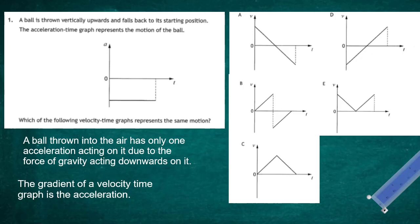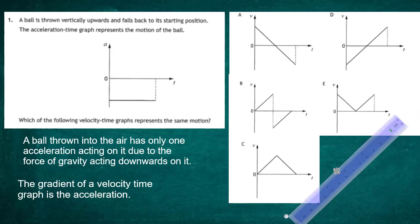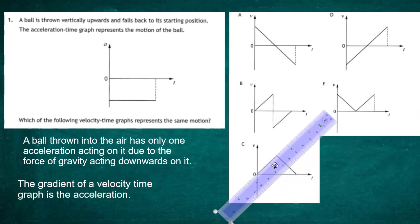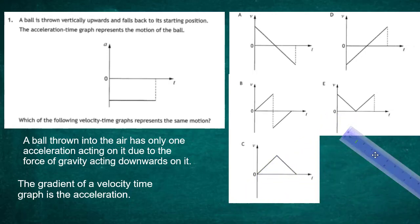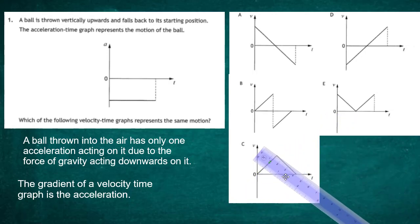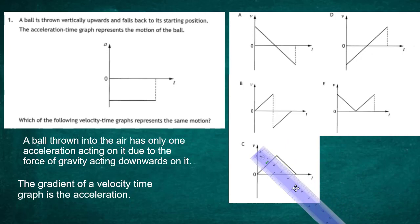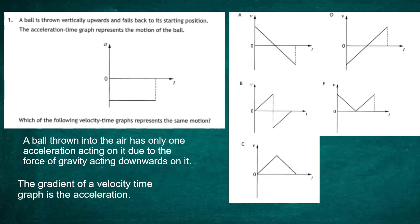Graph C can be ruled out because it has two different gradients, implying two different accelerations are taking place — which is not the case. There is only one acceleration: the acceleration due to gravity. Likewise, Graph E can be ruled out because it also shows two different gradients, indicating two different accelerations.